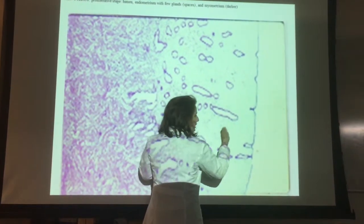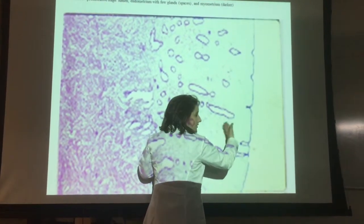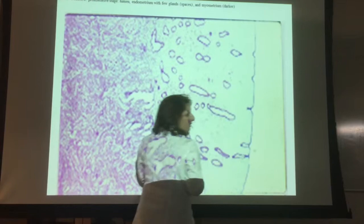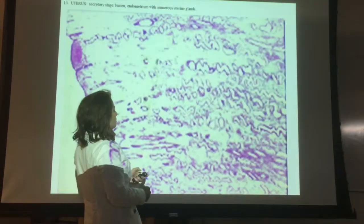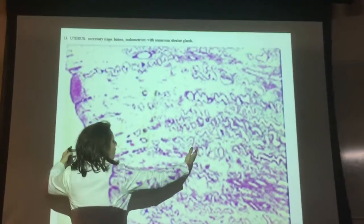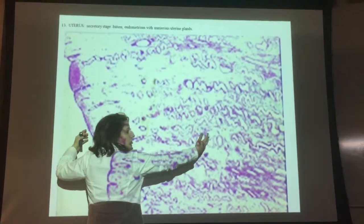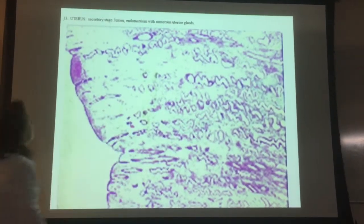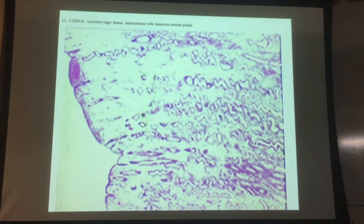The proliferative stage means that the cells are proliferating — they're making more — so you can get a bigger endometrium. And now it's going to start to secrete stuff. That's why it's the secretory stage.